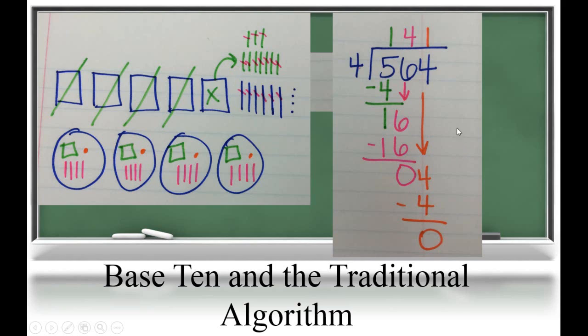I have no tens left over. So, now I can bring down my 1's and divide my 1's. I have 4 ones, so 1 one goes in each group. I record that on my division algorithm. 1 one times 4 groups is 4 ones that I used. I subtract to see how many are left over. And I have no ones left over.